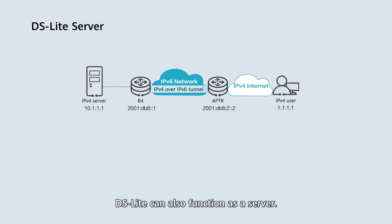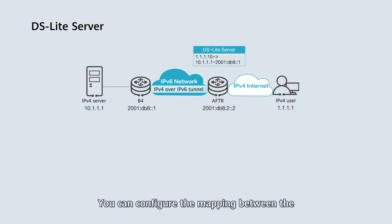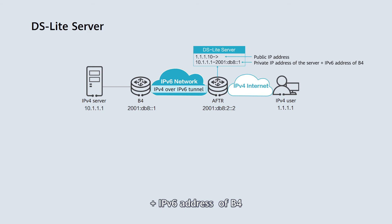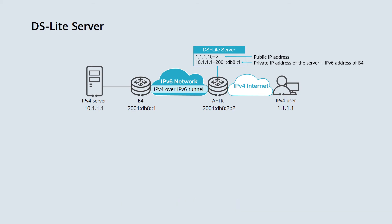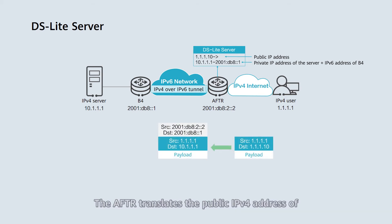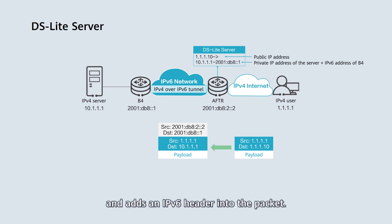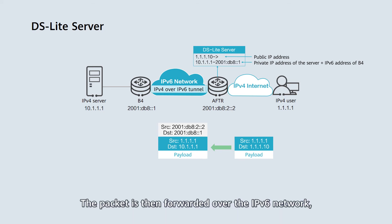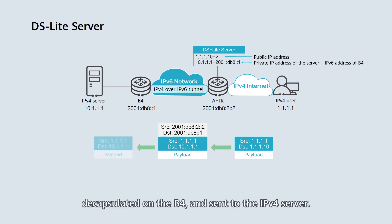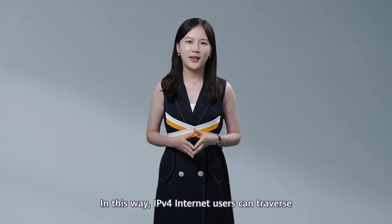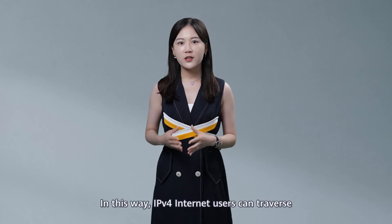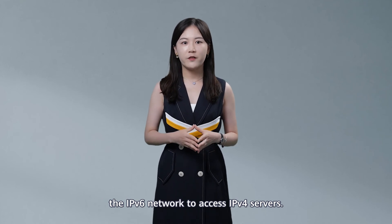DS-Lite can also function as a server. You can configure the mapping between the private IP address of the server plus the IPv6 address of B4 and the public IP address of the server. The AFTR translates the public IPv4 address of a packet into a private IPv4 address based on the mapping and adds an IPv6 header. The packet is then forwarded over the IPv6 network, decapsulated on the B4, and sent to the IPv4 server. In this manner, IPv4 internet users can traverse the IPv6 network to access IPv4 servers.